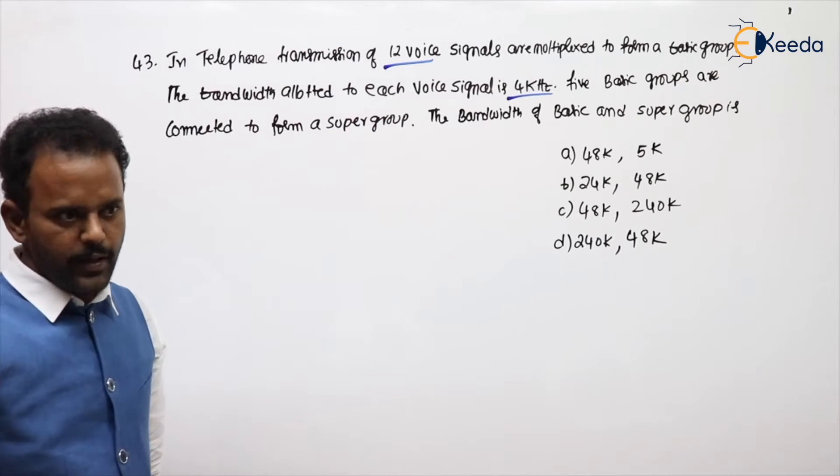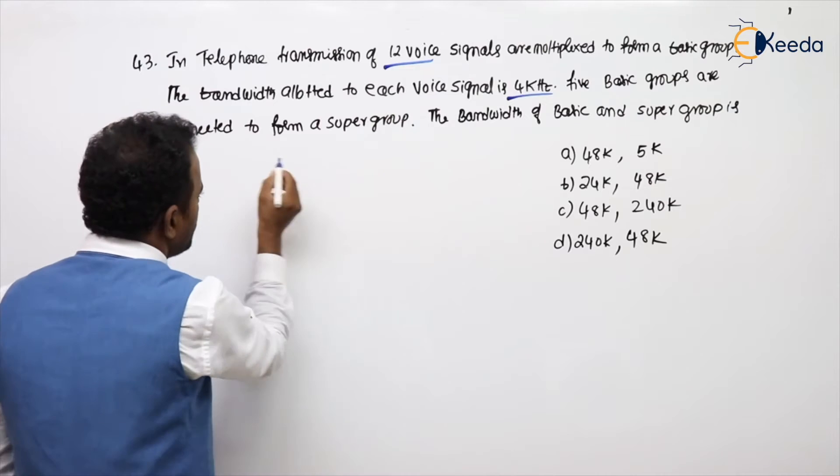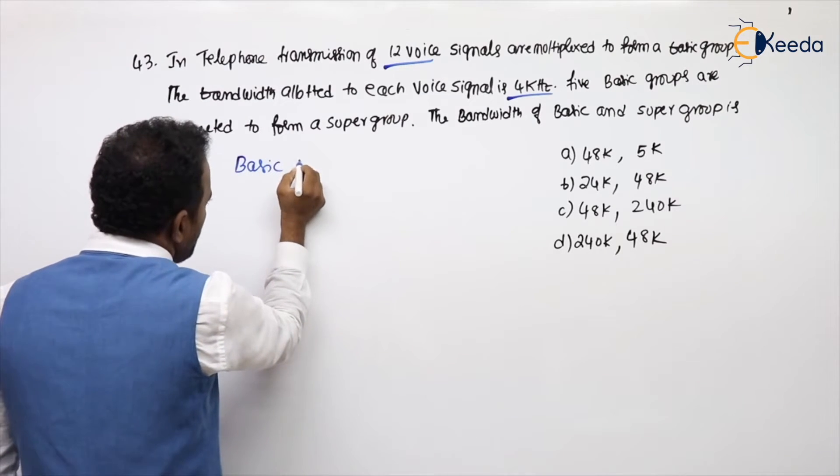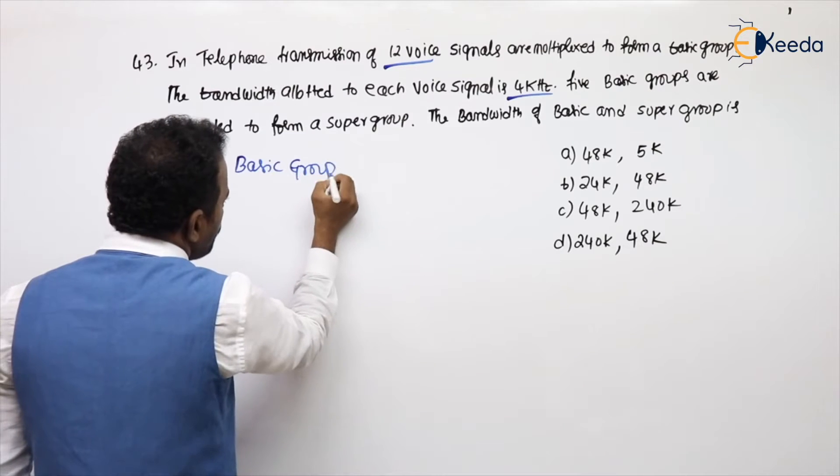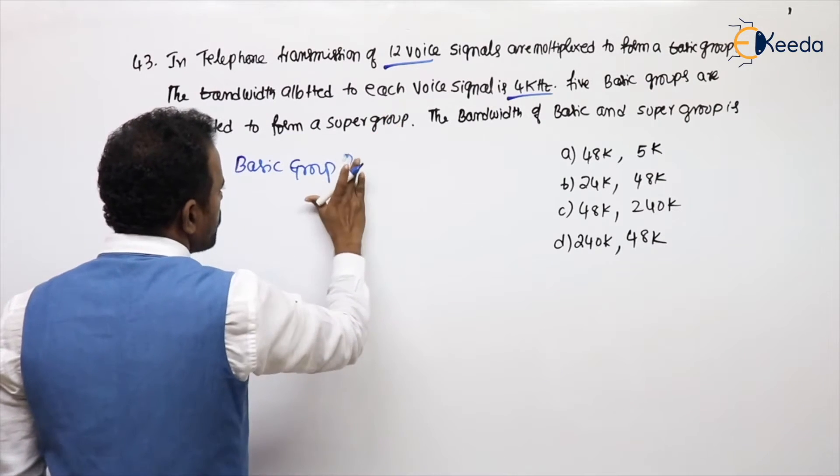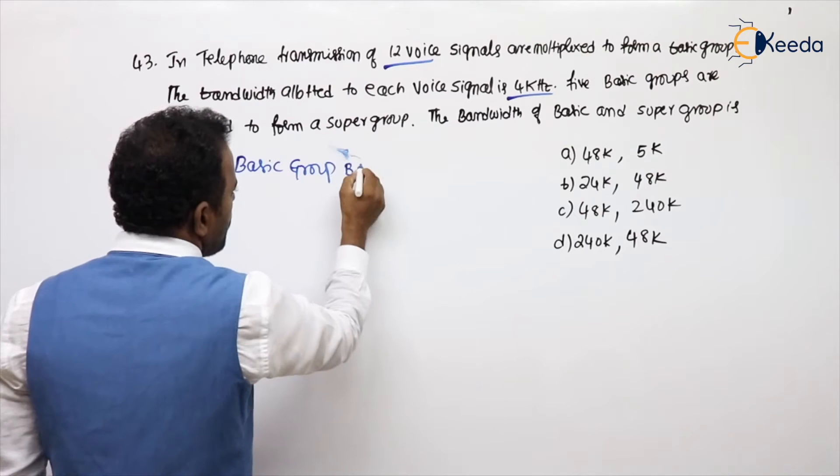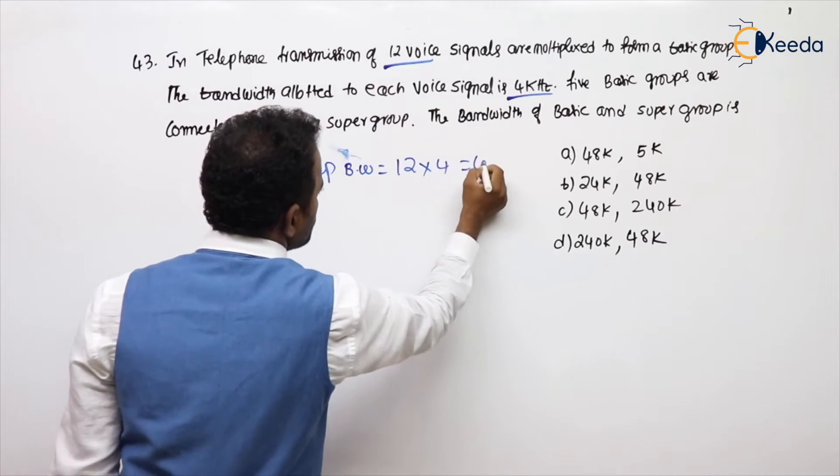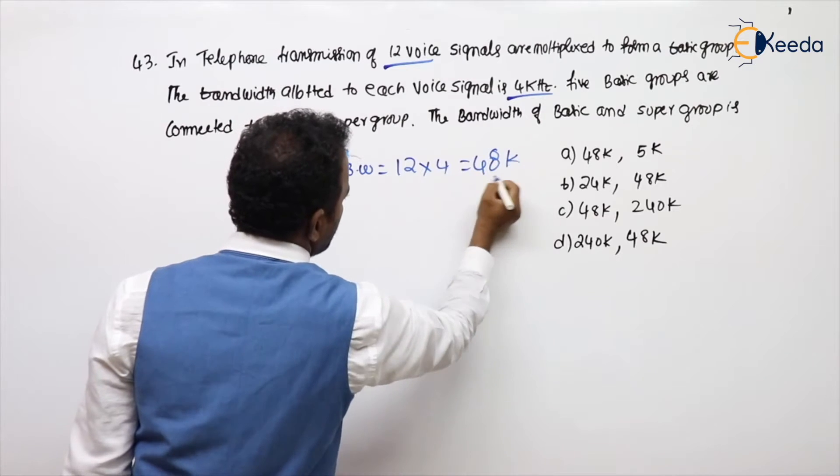How are we forming the basic group? We are forming the basic group by multiplexing of 12 voice signals. Basic group bandwidth, I am directly writing. By multiplexing of 12 voice signals, each of 4K, so 48K for the basic group.